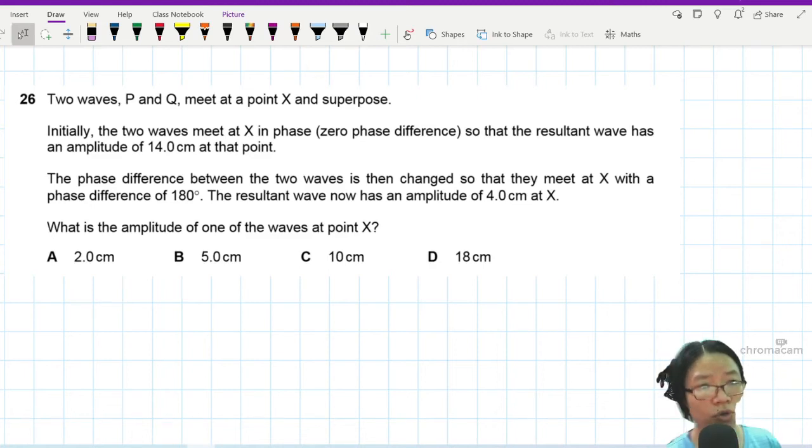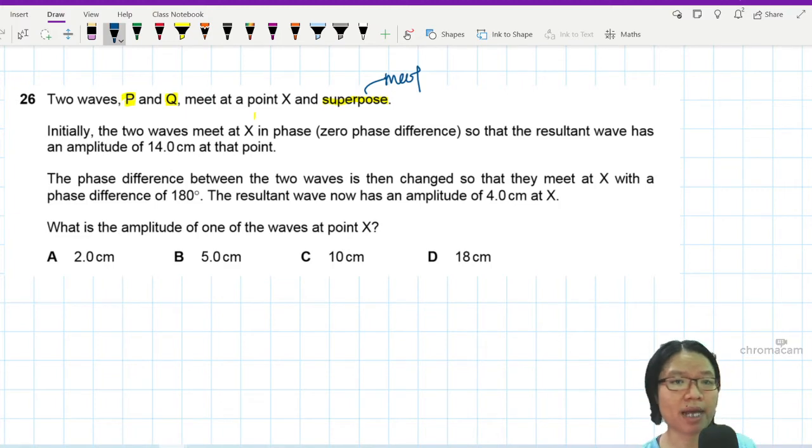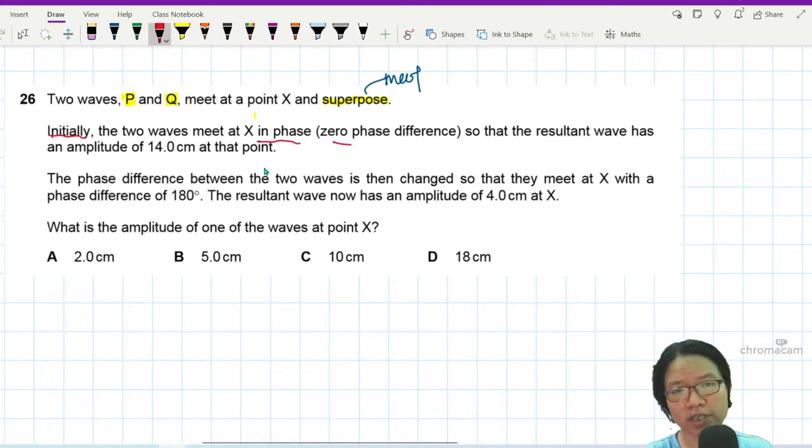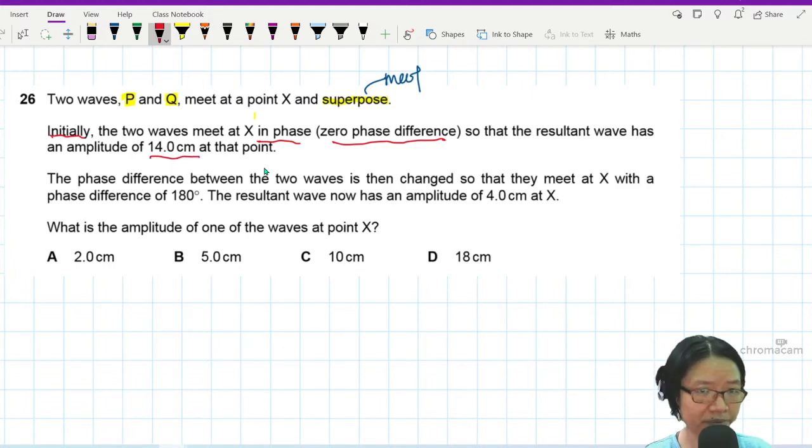Question 26. Two waves, P and Q, meet at point X and superpose. So you've got P and you've got Q and they superpose or they meet. Initially the two waves meet at X in phase, so initially they are in phase with zero phase difference so that the resultant wave have an amplitude of 4.0 cm at that point.